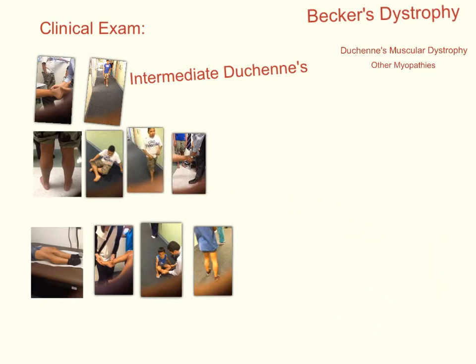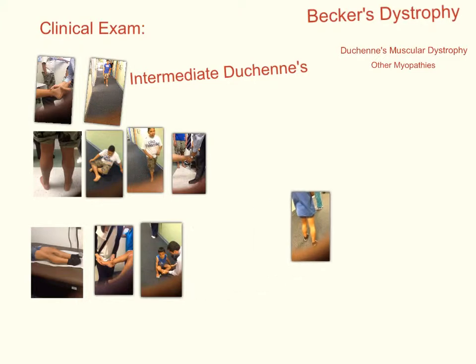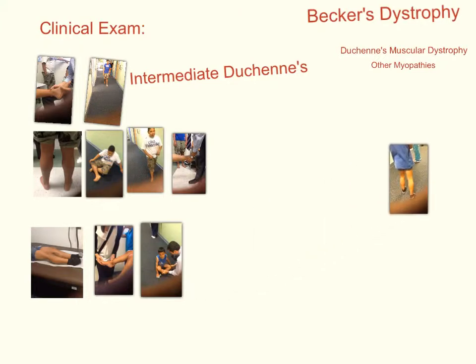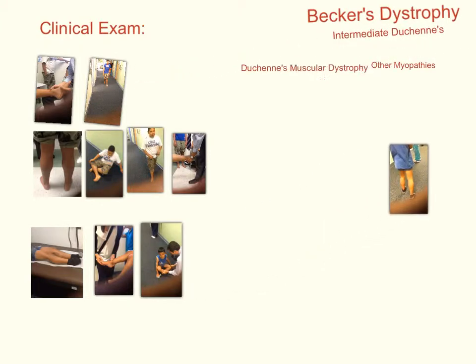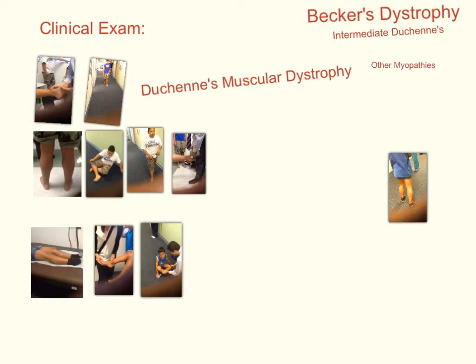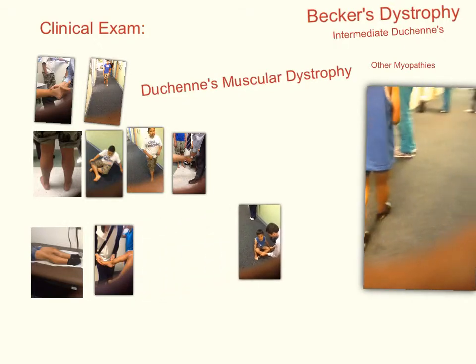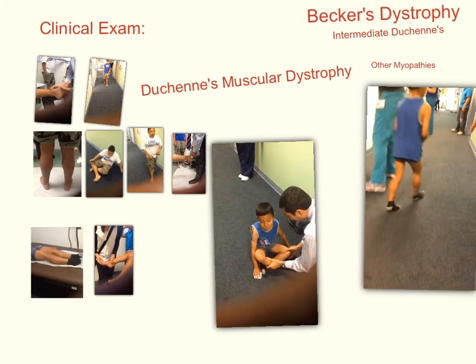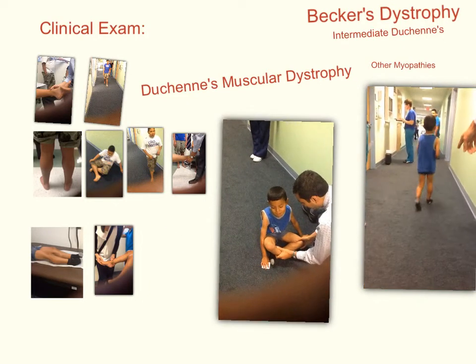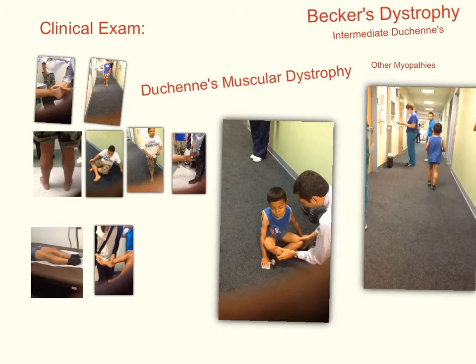Duchenne's muscular dystrophy is the most severe form of muscular dystrophy. There is a total lack of dystrophin protein in the muscle. As shown by these pictures and videos, this 7-year-old patient exhibits severe muscle weakness.